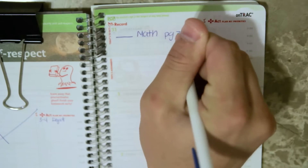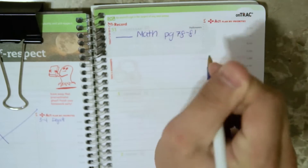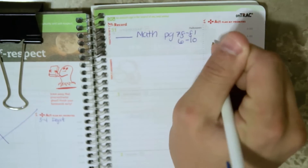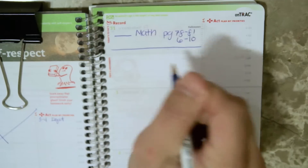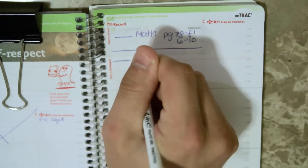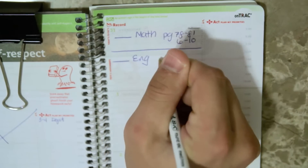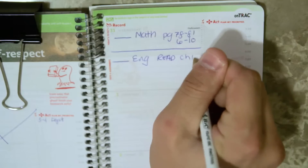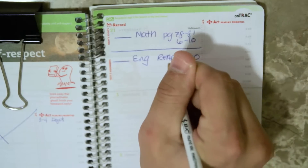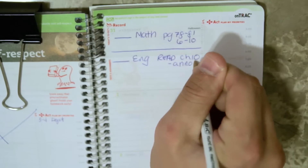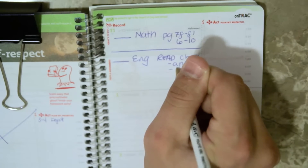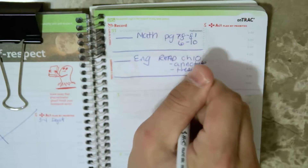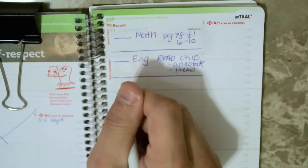We're going to start off with a little organization. What you see here is a student copying down his or her homework assignments. They keep it organized and separate — it's neat and readable. There's a line next to each homework so that when they're done, they can check it off to show that it's completed.